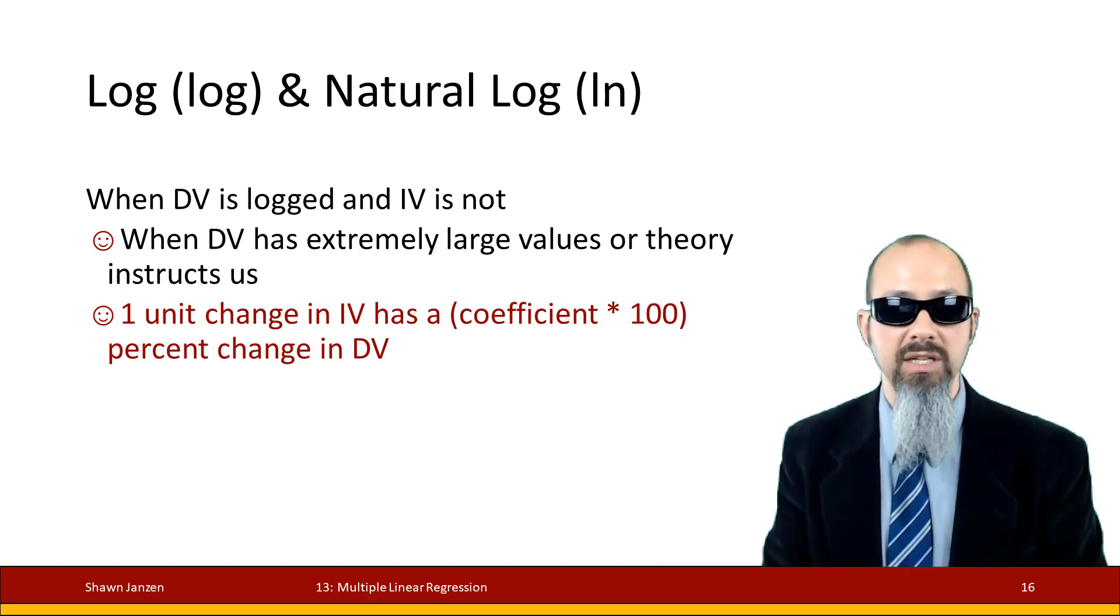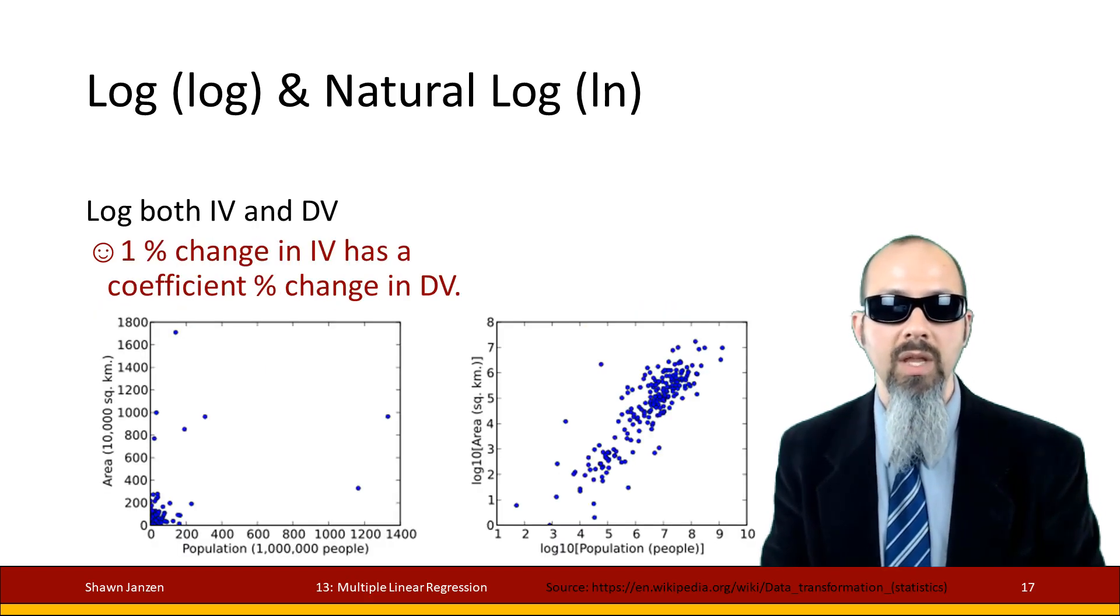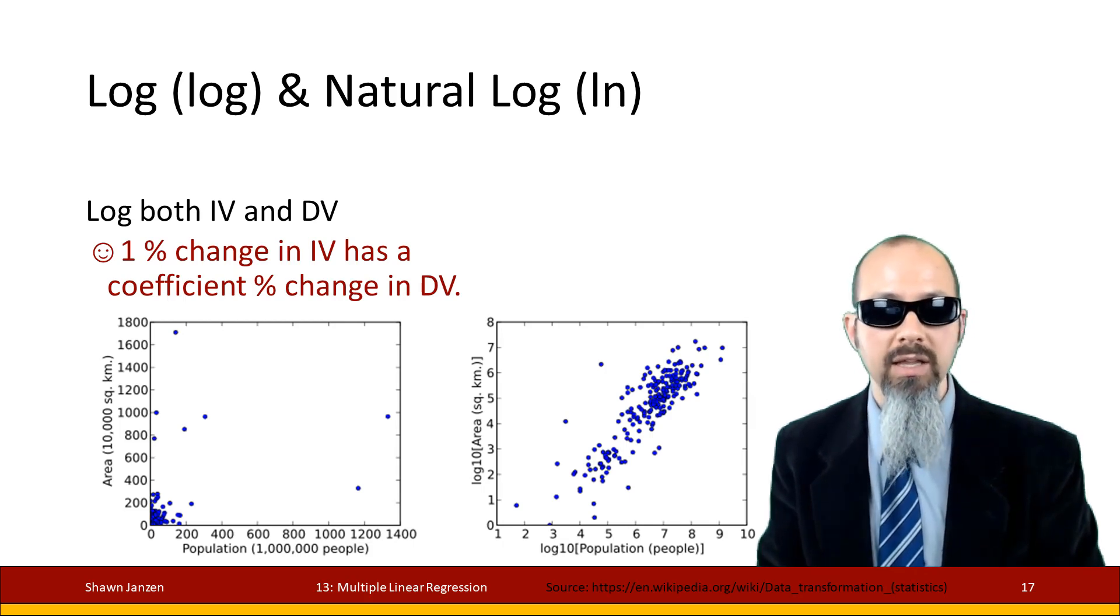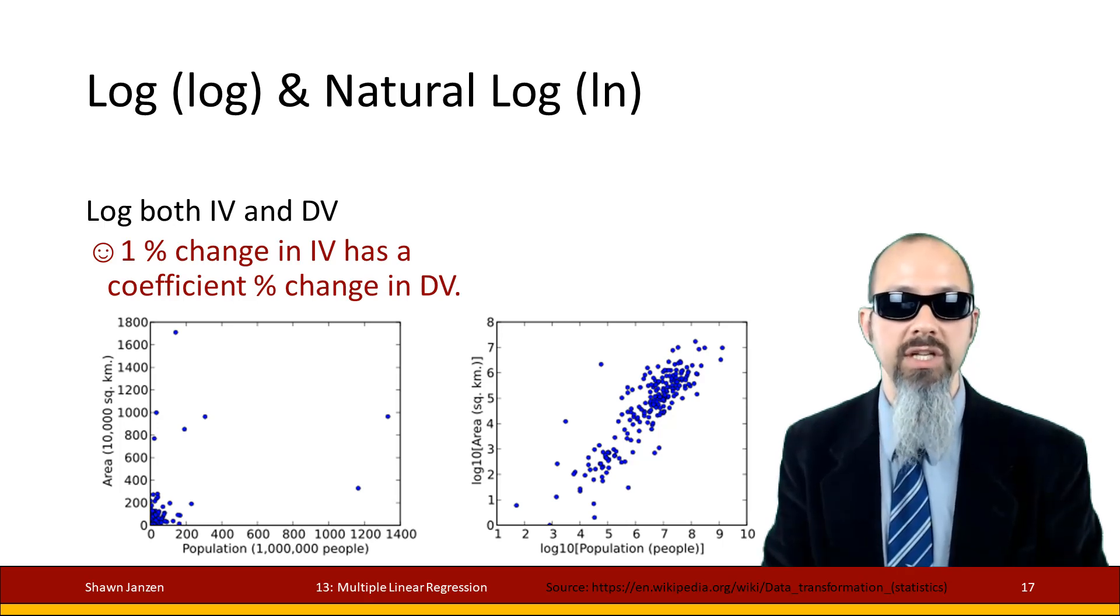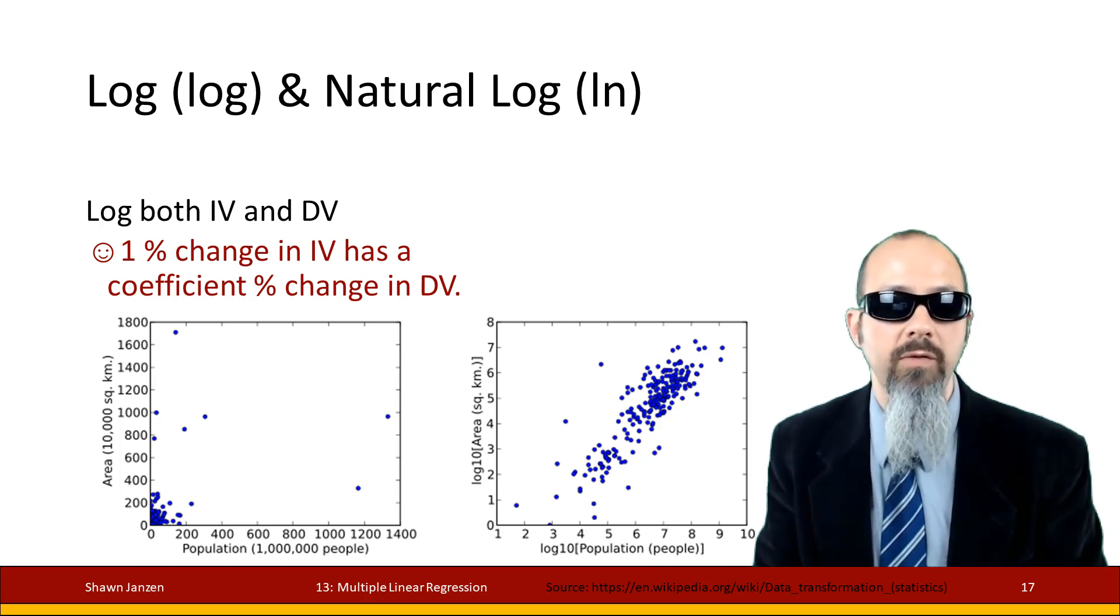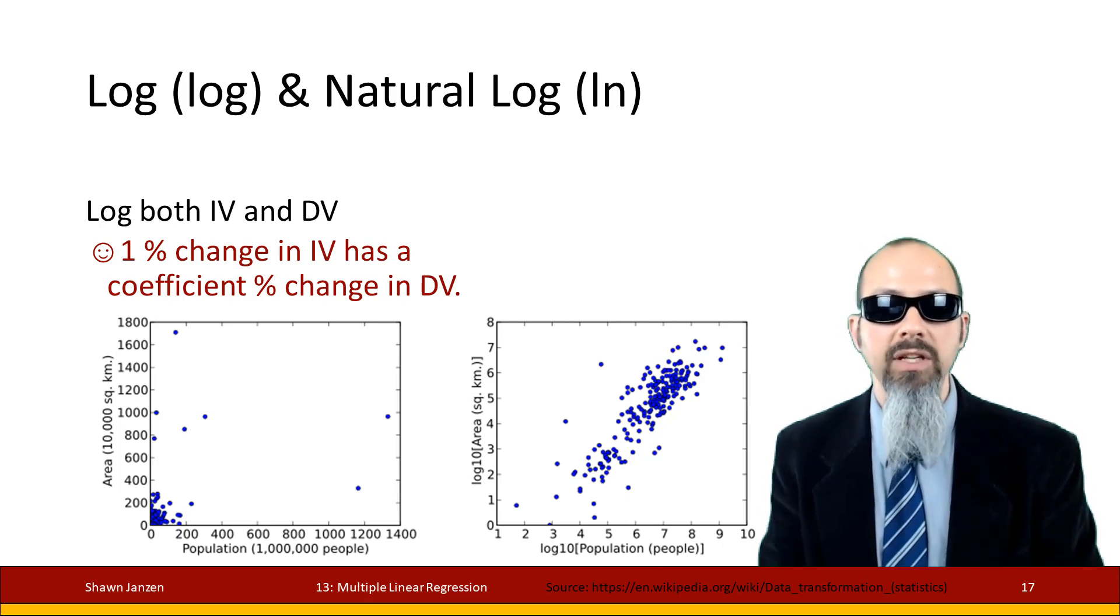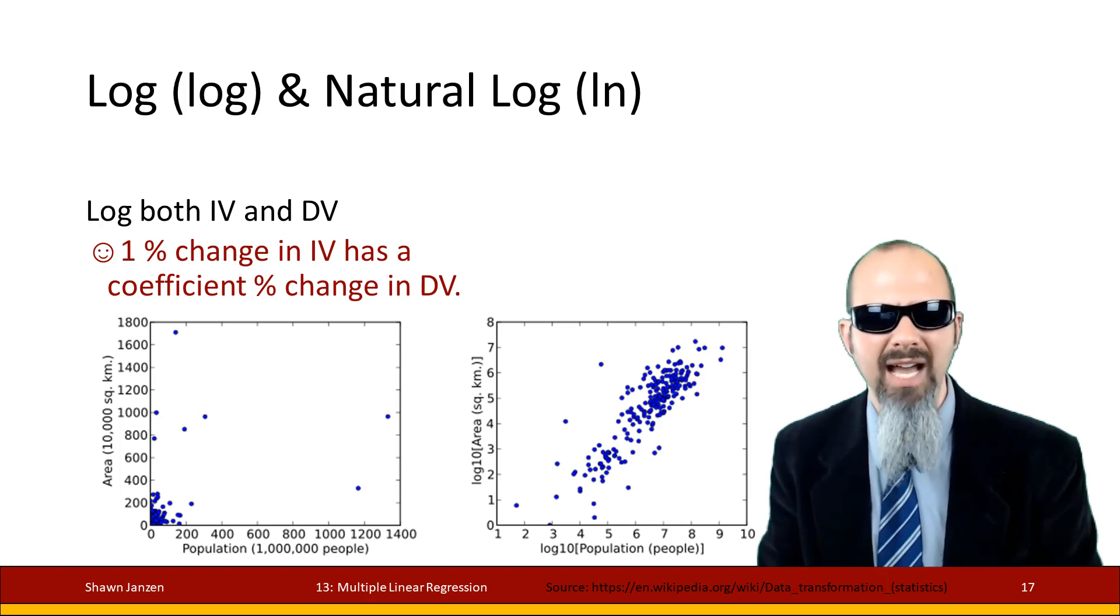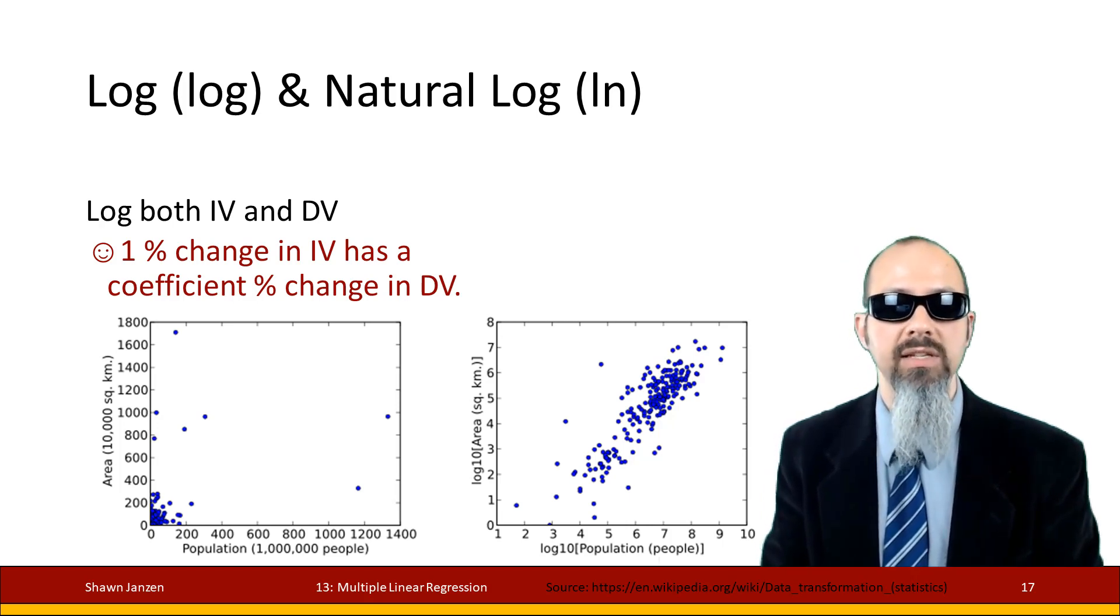When we do the log and natural log and we have both independent and dependent variable logged, then we get to say that a 1% change in the IV has a coefficient percent change in the DV. So they both get to be accounted for in terms of percent change. And then the coefficient just expresses a percentage, not multiplied or divided by any particular thing. And if you look at the graphics down below, it's fantastic for really pulling that data out that's really packed down in the bottom right. It really helps draw it out into the rest of the graph so you can see how some of these things change.